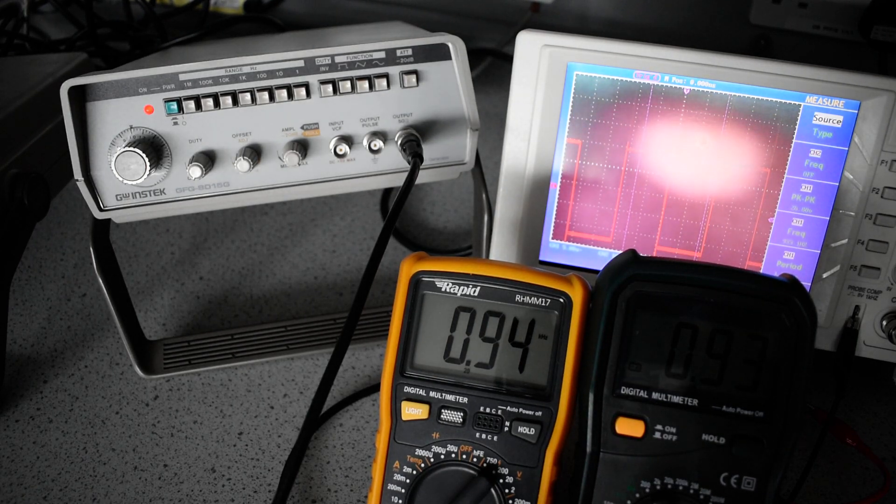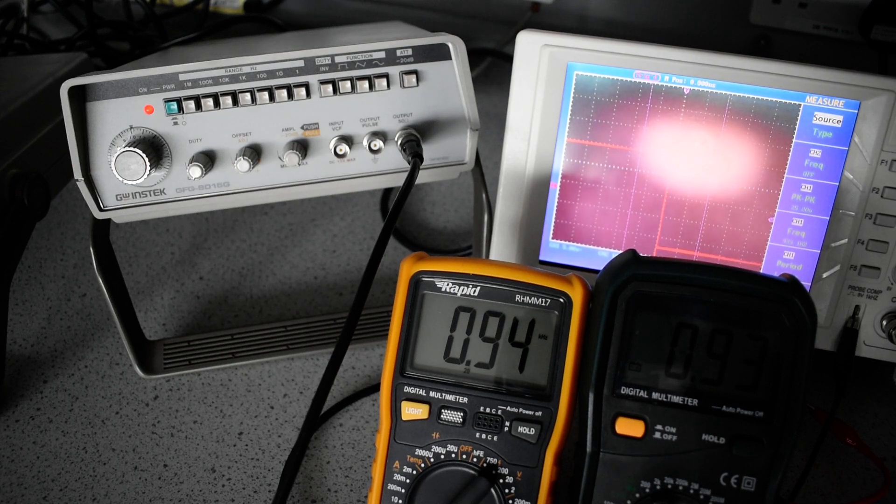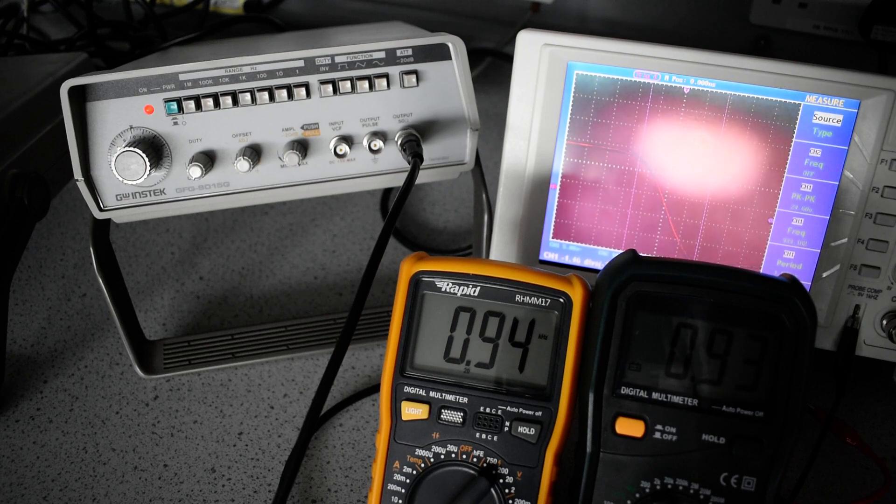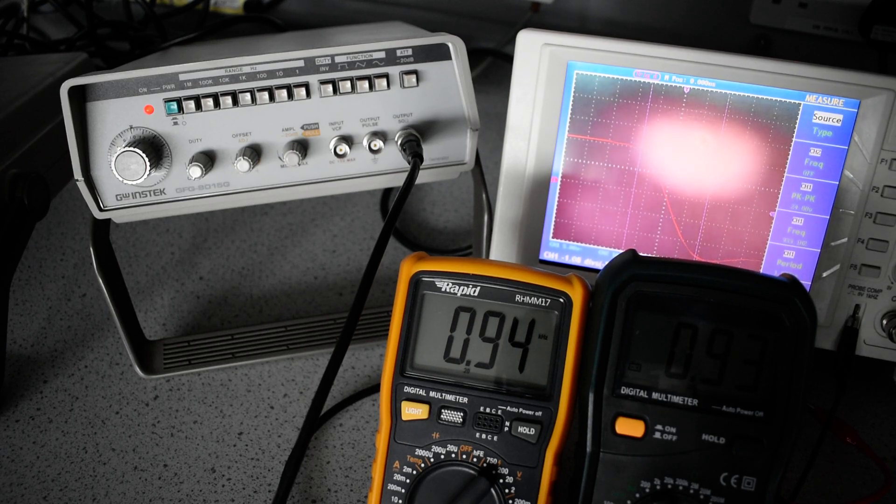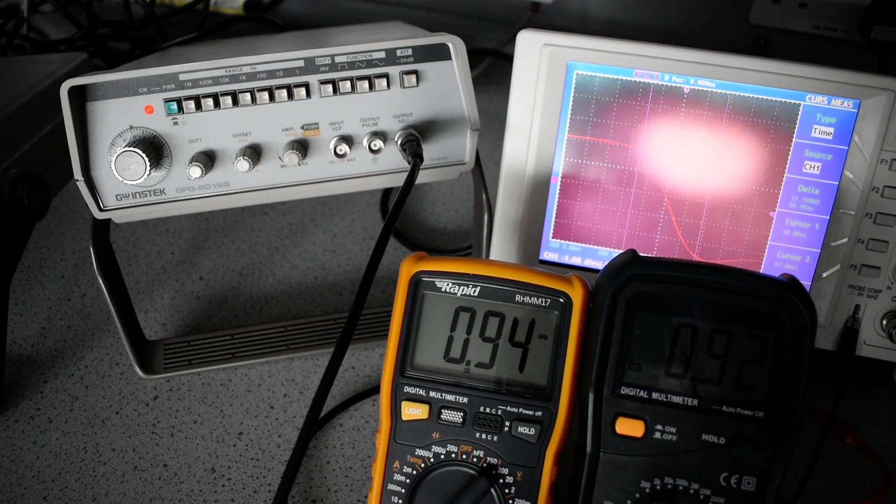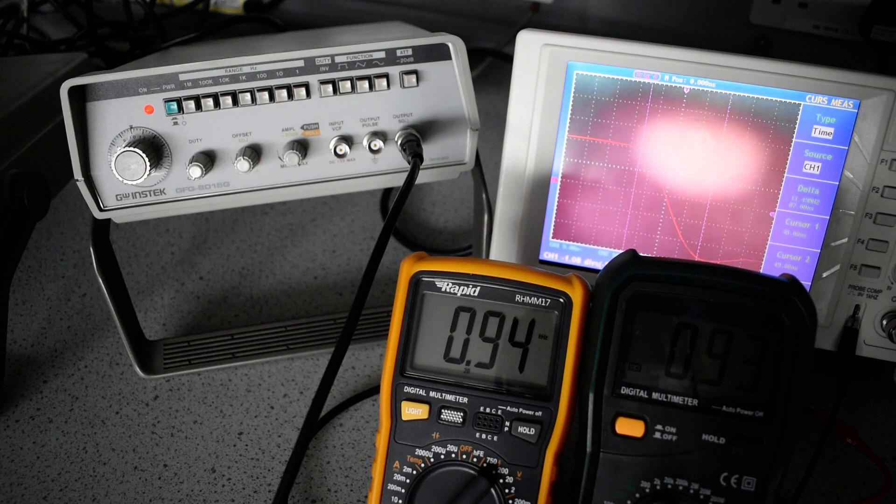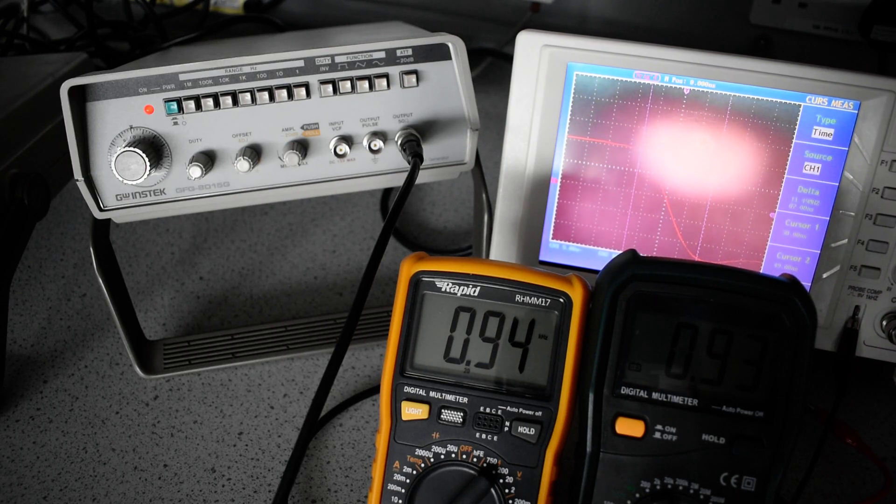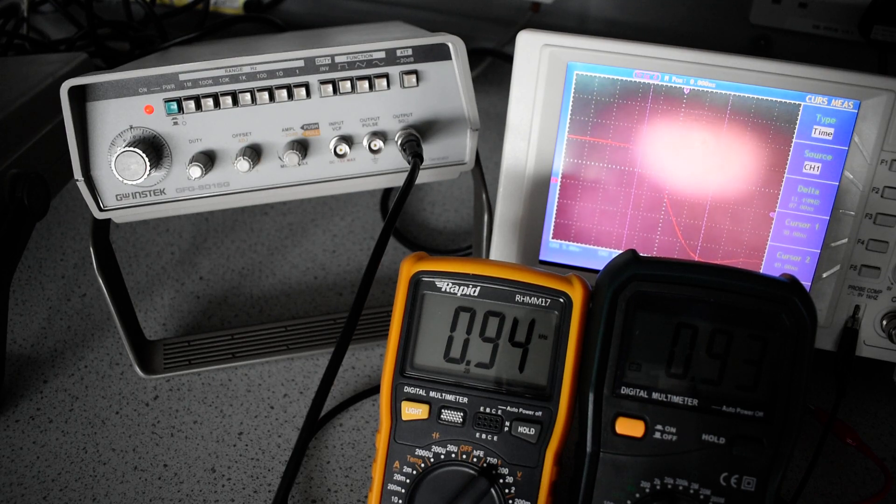If we want to check rise time of signals of a square wave, we can wind the horizontal time base down and we can use the cursors to measure the rise and fall times. If we use those cursors, we can see that we're measuring about 87 nanoseconds for the fall time, which is within spec. It has to be less than 100.